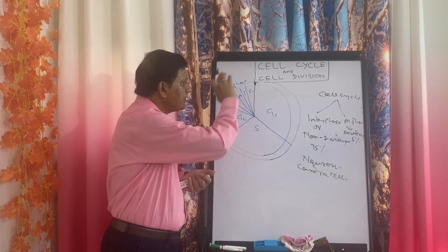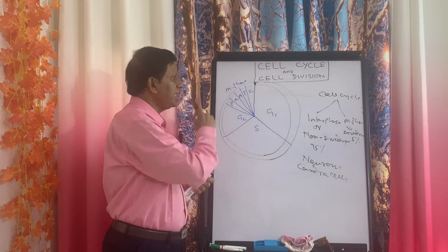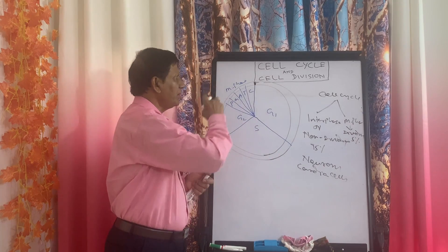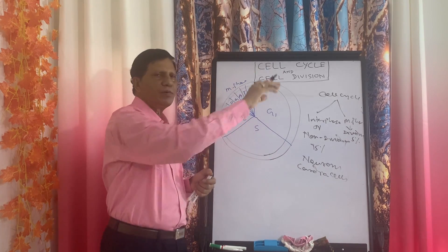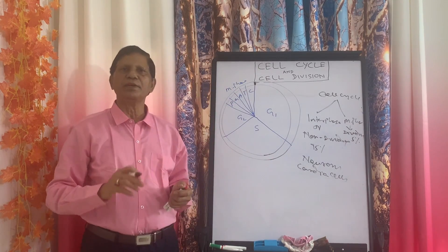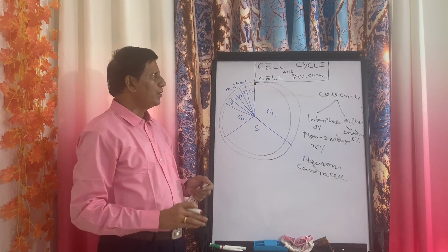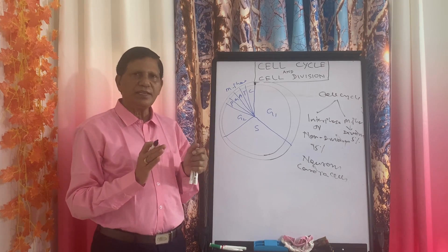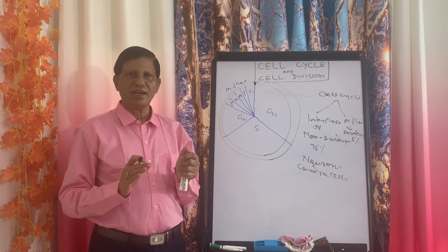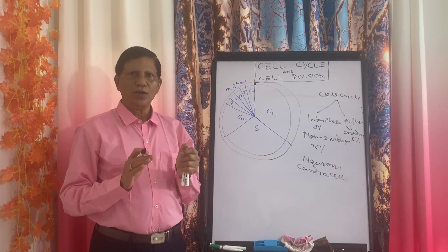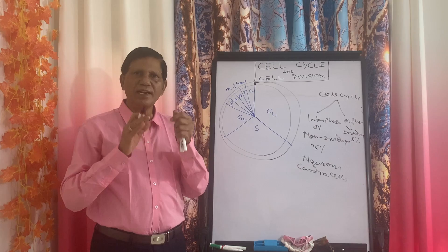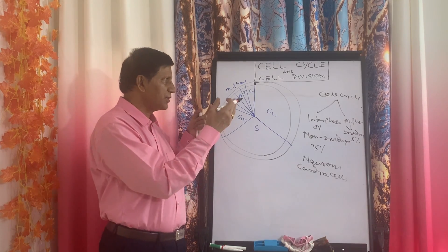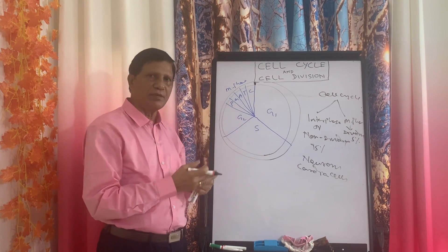So this is the cell cycle — it starts from a particular point and goes round until one cycle is complete. This is the basic idea of why the cell has to divide and what are the different stages of cell division.